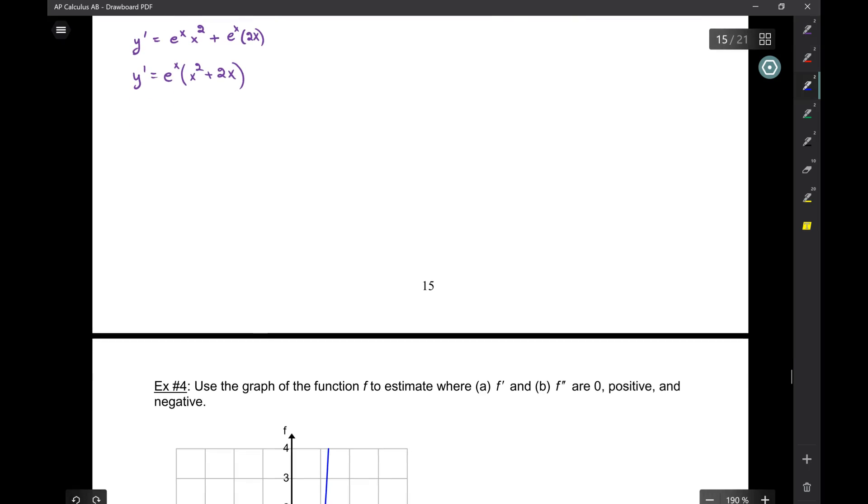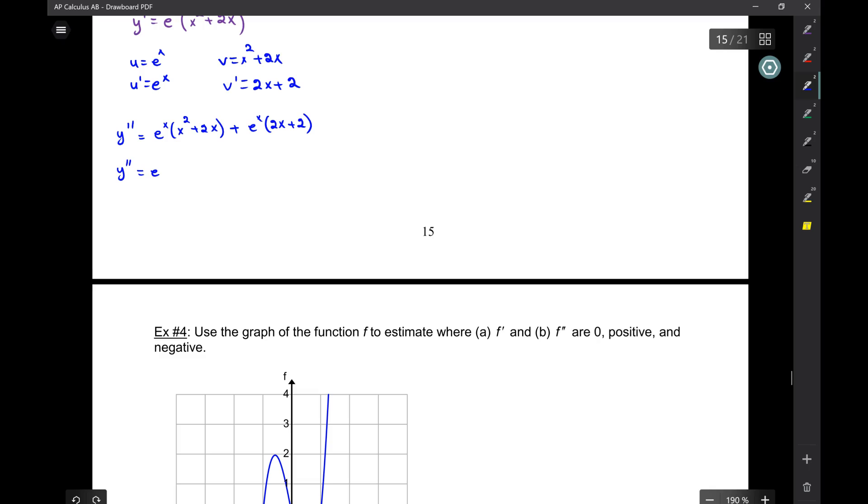So, to find y double prime, again, u is gonna equal e to the x, v, x squared plus 2x. So, u prime, e to the x, v prime, 2x plus 2. So, y double prime is e to the x, x squared plus 2x, plus e to the x, 2x plus 2. Okay, I can factor out an e to the x from this entire thing. So, I get x squared plus 2x, plus 2x, plus 2. So, y double prime is equal to e to the x, x squared plus 4x, plus 2.